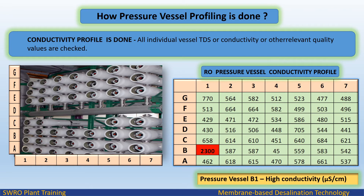How is pressure vessel profiling done? A conductivity profile is conducted by checking all individual vessel TDS, conductivity, or other relevant quality values. For example, a sample conductivity profile may reveal pressure vessel B1 as having high conductivity, flagged as NUS-CM.